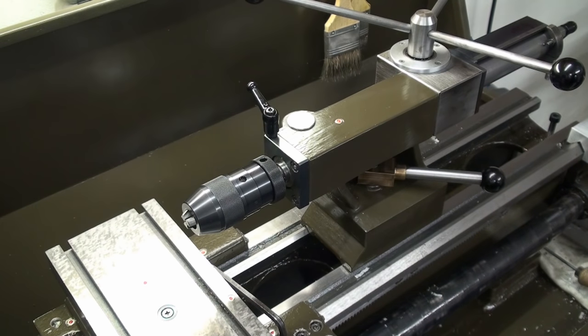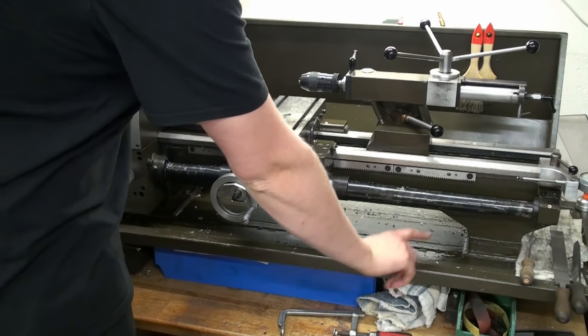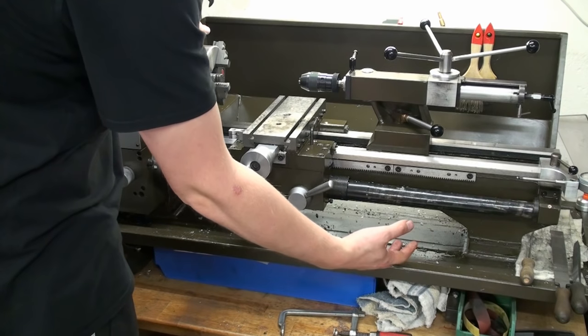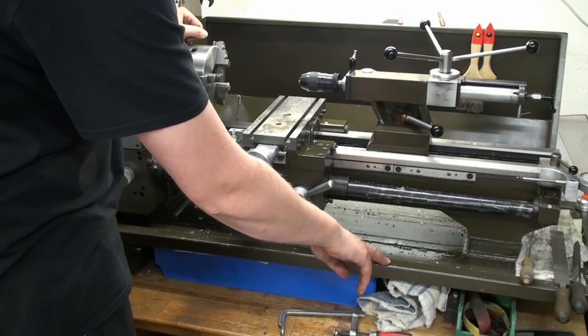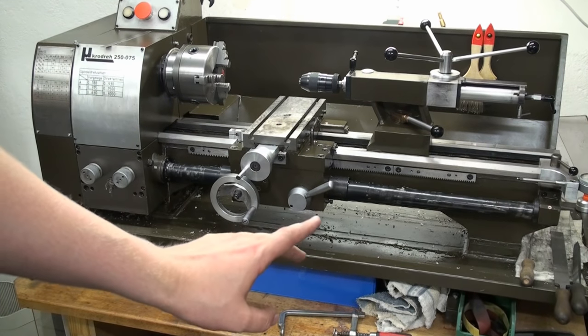So, that's the tailstock. I also welded up this chip pan. Which also is, the chip pan is integrated in the machine's base. Let me bring around the camera and I'll show you what I mean.